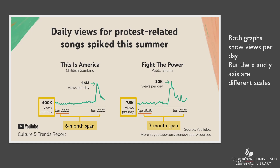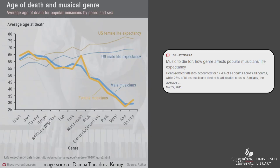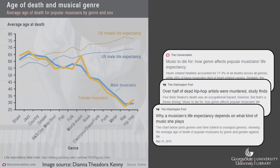The graph creator also uses a different scale for the x-axis on both graphs. On the 'This is America' graph on the left, it shows views per day across a six-month span, while the 'Fight the Power' graph on the right shows views per day across a three-month span. This chart was featured in a news article on The Conversation, which is supposed to be a place for academics to share their research with the public. The chart and its data was picked up by other news organizations, including two articles in the Washington Post. By reading the headlines and looking at the chart, it looks like what musical genre a musician falls under could be deadly — it shows that the life expectancy of rap and hip-hop artists is much lower than the life expectancy for jazz and blues artists.